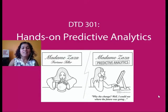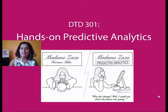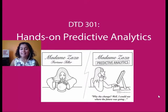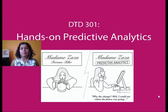Welcome everybody to DTD 301 Hands-On Predictive Analytics. This is Bianca here, and this course is the level three course, so it is a follow-on to the Hands-On Business Analytics course, which most of you have already taken. You're going to build on the framework we learned in business analytics with some advanced material here.